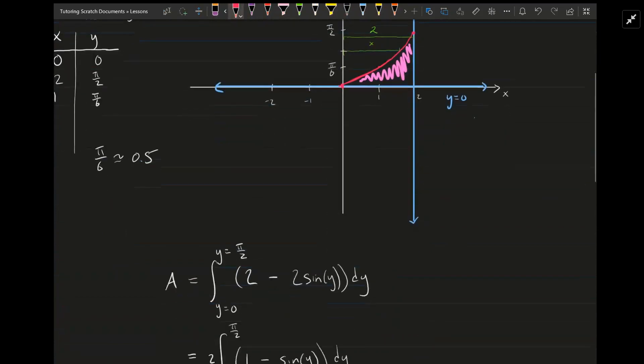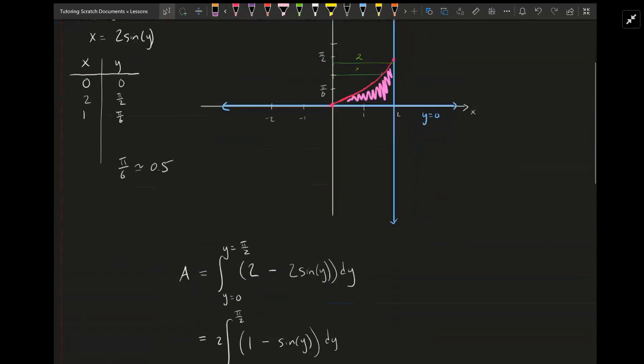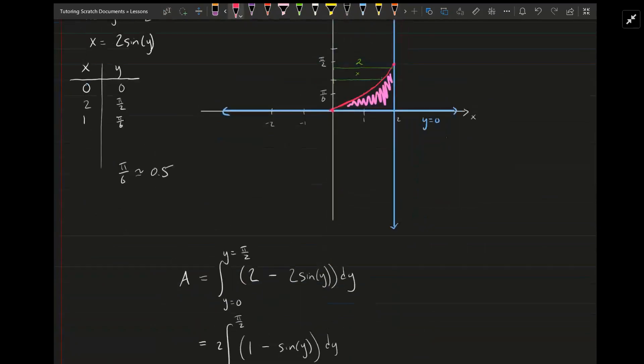So the way we do that, we can see that we want to do an integral on this interval right here, probably from y equals 0 to y equals pi halves, because that's where these two graphs are going to intersect.